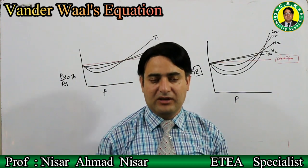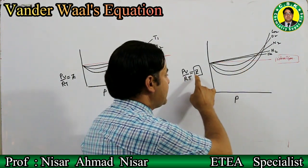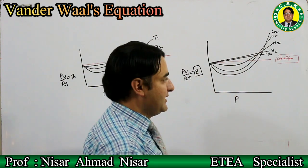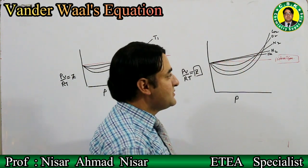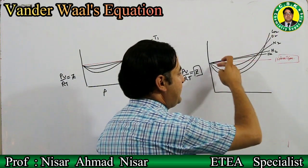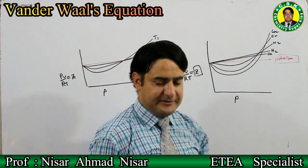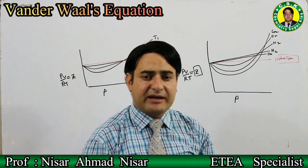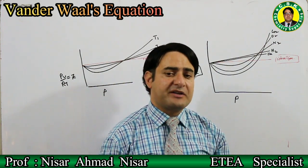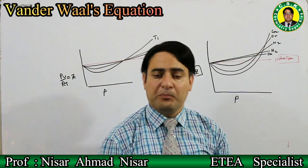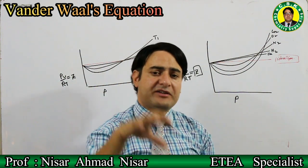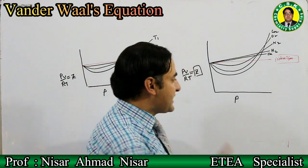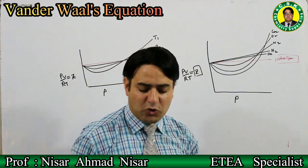But practically, when we plot Z for different gases against pressure, we never get a horizontal line. As shown in the graph, when Z is plotted against pressure for helium, the line deviates from horizontal. Similarly for hydrogen, nitrogen, oxygen, and carbon dioxide — all deviate. So for any real gas, plotting Z against pressure never gives a horizontal line at all temperature and pressure conditions.